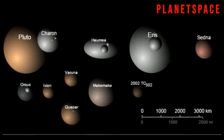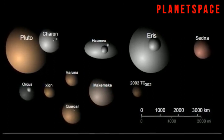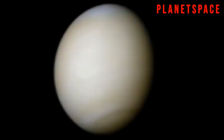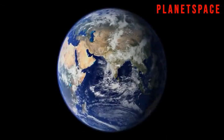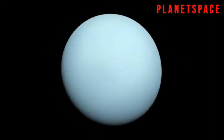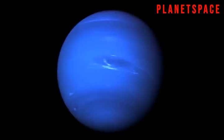That leaves us with eight official planets in our solar system. Mercury, Venus, Earth, Mars, Jupiter, Saturn, Uranus, and Neptune.